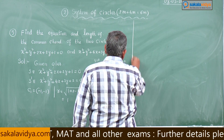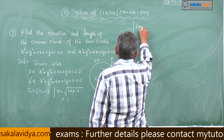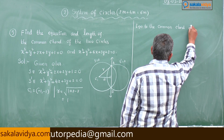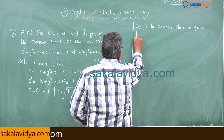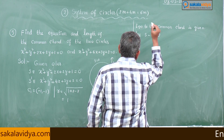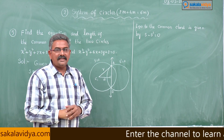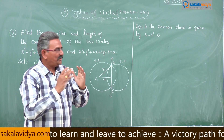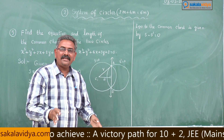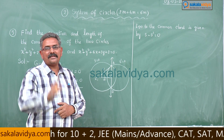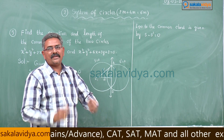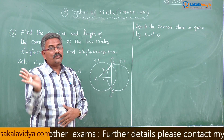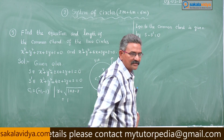To find the equation of the common chord, it is given by s − s' = 0 or s' − s = 0. An important restriction: before writing s − s' = 0, both s and s' must be in general form where the coefficients of x² and y² are equal to unity. Otherwise we must normalize them first, or we will not get a straight line.